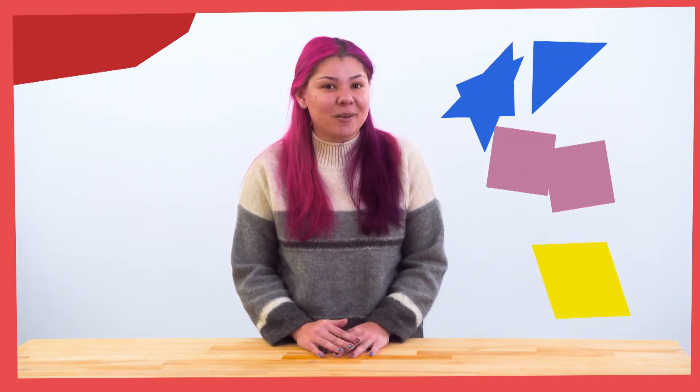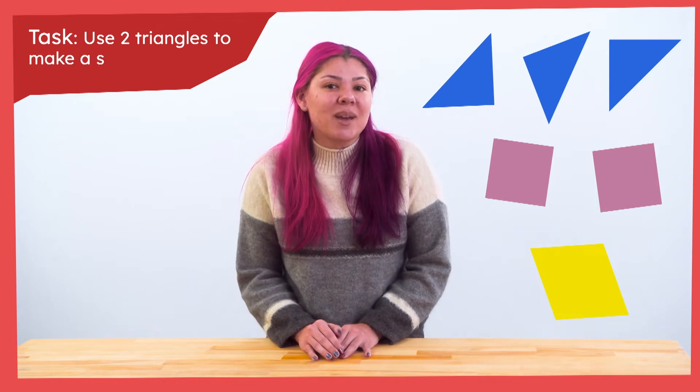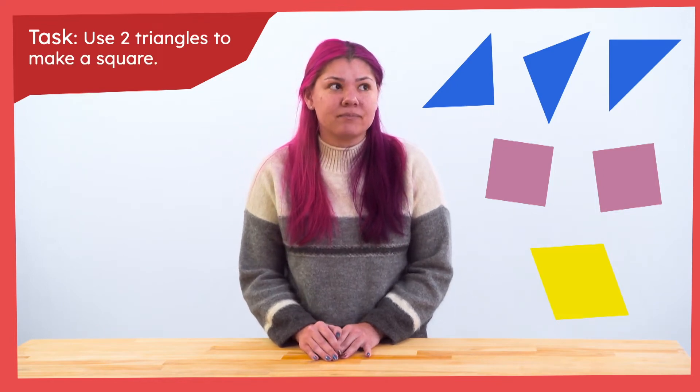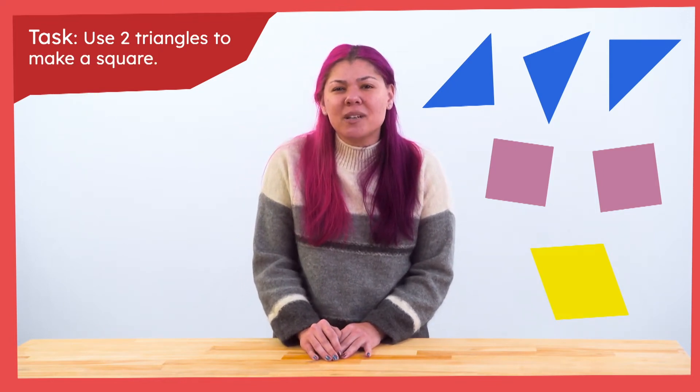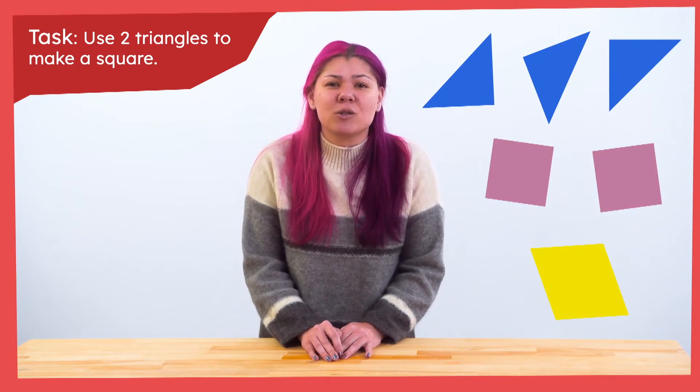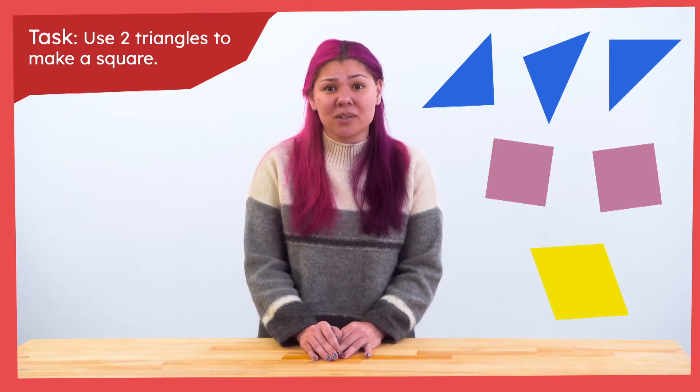My friend has given me three challenges and each one involves at least one of these shapes. Let's look at the first one. Here it is: use two triangles to make a square. Before we get started, I'm wondering if you can help me figure out which of these shapes are triangles. Which ones do I use?